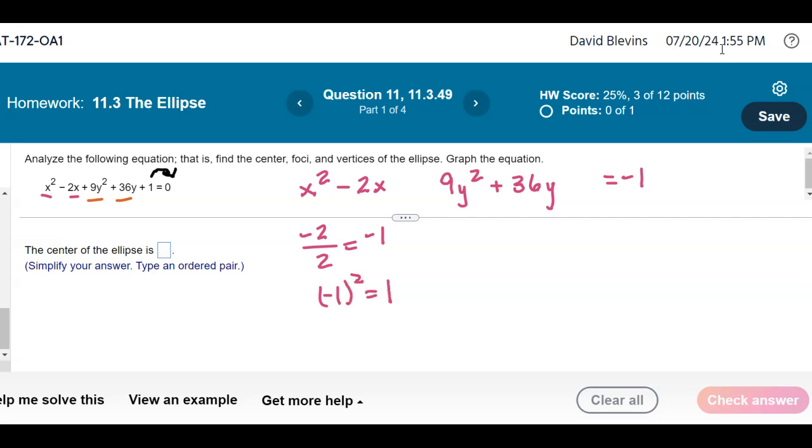Now the y part's not ready to go. Here I'm going to factor out a 9, leave a space, and then complete the square. 4 divided by 2 is 2, and 2 squared is 4, so I'm adding a 4 here. But there's a 9 times 4 is technically what I've added now. 9 times 4 is 36, so I need to add 36 to the right hand side.